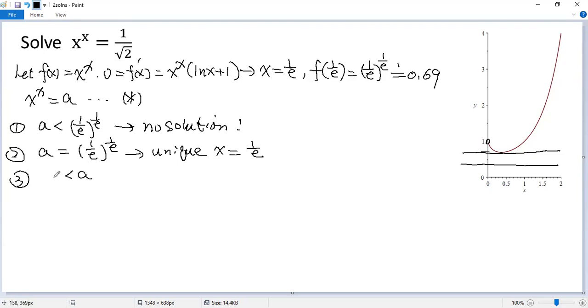When a is greater than the minimum value, 1 over e to the power of 1 over e, but less than 1, so y equals a would look like this one. Then you see there's two intersections. So you should have two solutions.